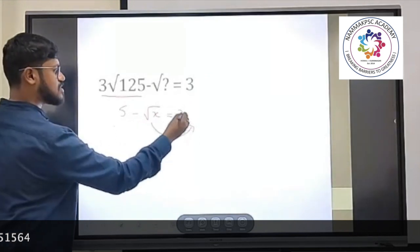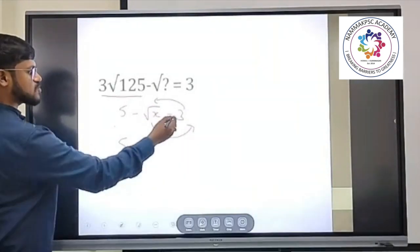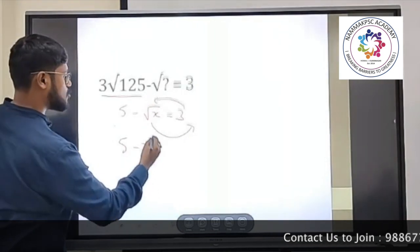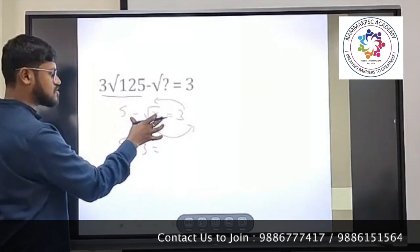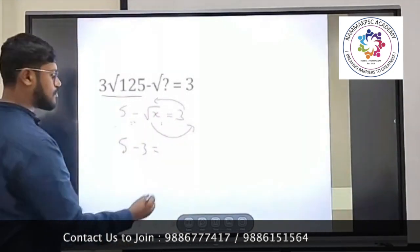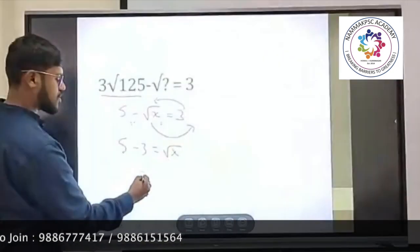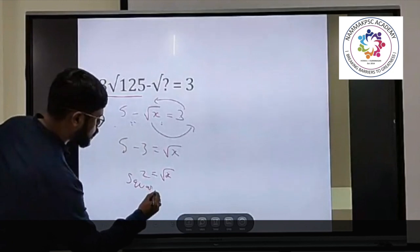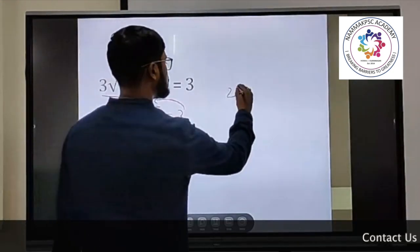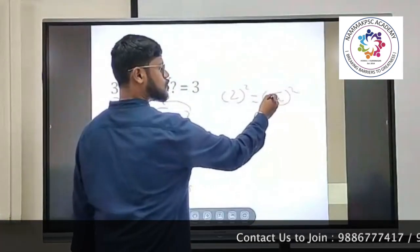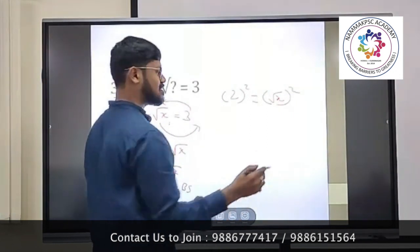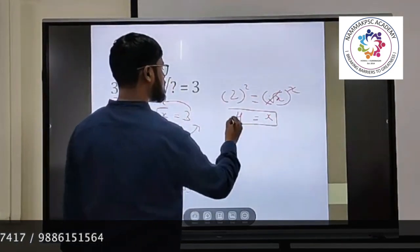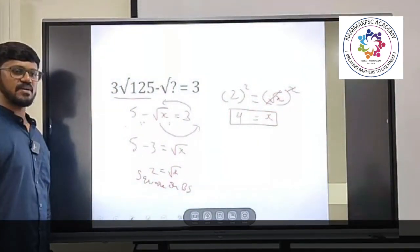Always remember: whenever variables and numbers are there, numbers go on one side and variables on the other. So taking the variable to one side: 5 minus 3 equals root x, which gives 2 equals root x. To remove the square root, square both sides — the square and square root cancel, leaving x equals 2 squared, which is 4. So x equals 4 is the answer. This is one more type of simplification question.